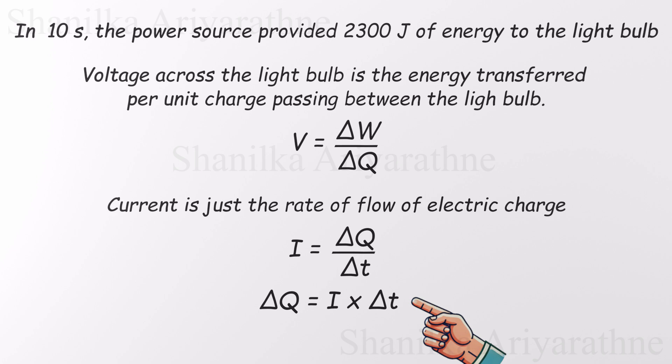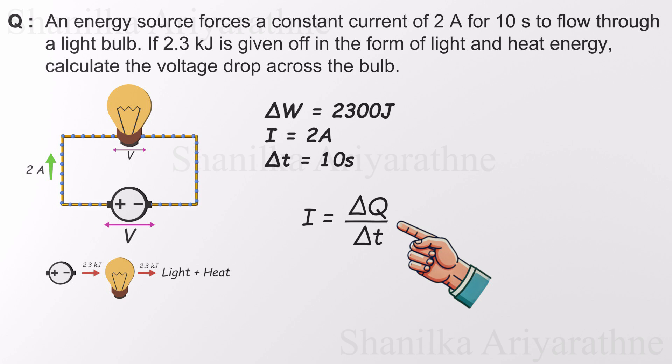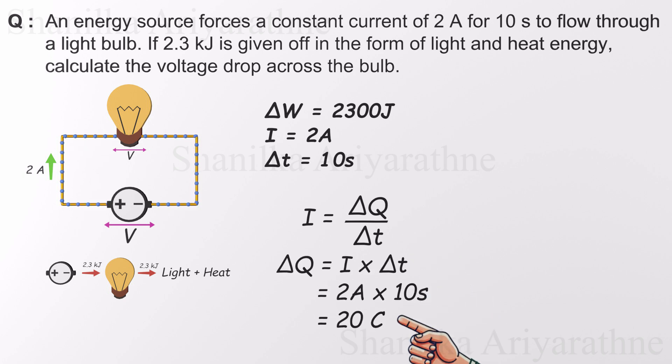All right, let's get solving. First, let's lay out what we know. The energy transferred is 2,300 joules, the current is 2 amps, and the time is 10 seconds. Now, to figure out the total charge that flowed through the bulb, we start with the current. A current of 2 amps means that 2 coulombs of charge are passing through the circuit every second. So over 10 seconds, that adds up to 2 times 10, which gives us 20 coulombs of total charge.